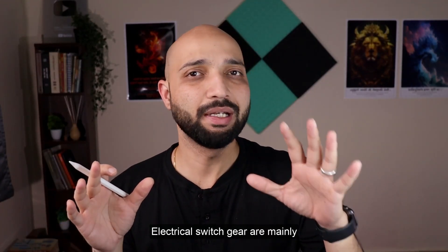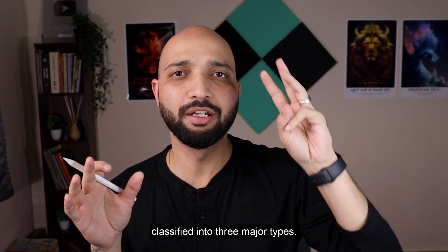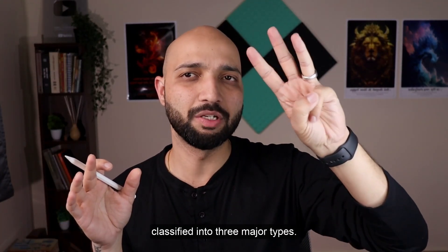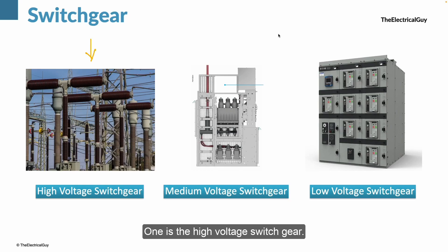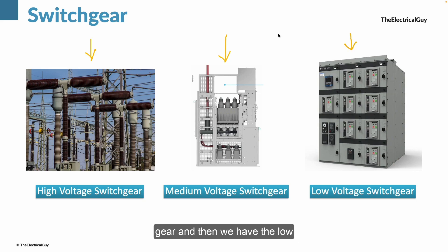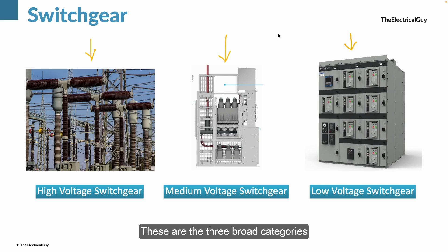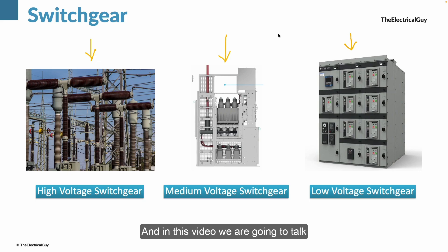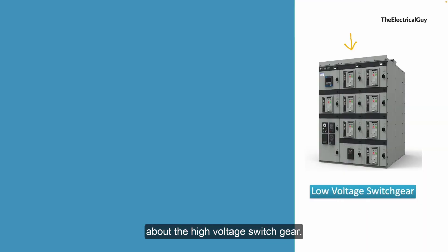Electrical switchgear are mainly classified into three major types: high voltage switchgear, medium voltage switchgear, and low voltage switchgear. These are the three broad categories, and in this video we are going to talk about the high voltage switchgear.